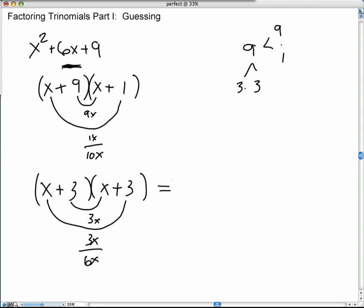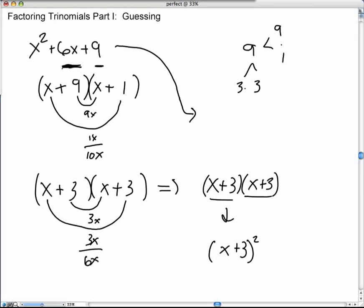Now, this one's called the perfect square trinomial, because both factors are the same. So, if they're both the same, you can put it as one factor with the square on it. And you'll also notice that on a perfect square trinomial, the constant, which is 9, if you take the square root of 9, it's going to give you 3. It's going to give you the factors that you need for factoring the trinomial.